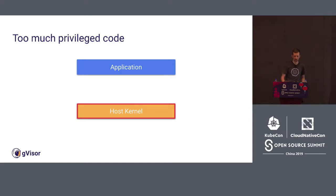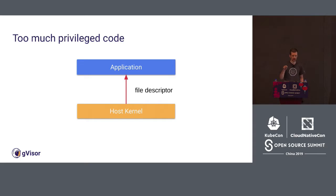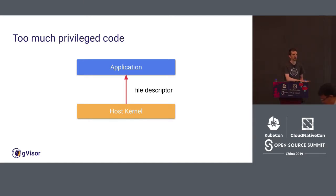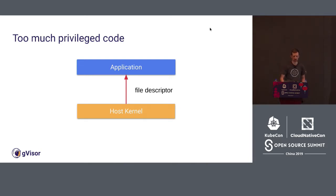This is something we don't really want. As part of the normal running of the application, it's actually calling into the Linux kernel and running code as the Linux kernel. This is the code that is suspect in terms of being privileged — if there's a bug in it, it could be potentially problematic in terms of the security of the overall infrastructure.